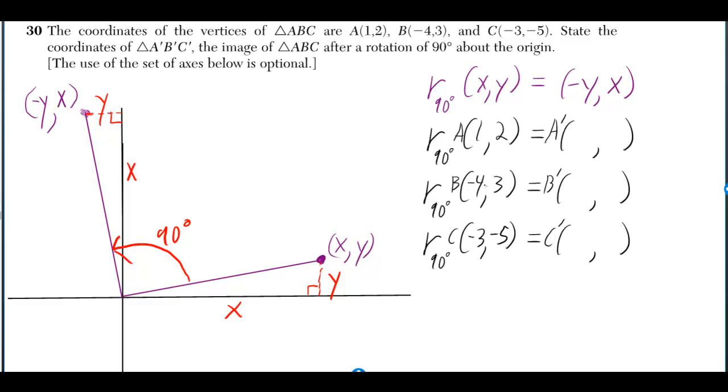So we'll use the formula on the three points of the triangle. (1, 2) will become (-2, 1). (-4, 3) becomes (-3, -4). (-3, -5) becomes (5, -3).